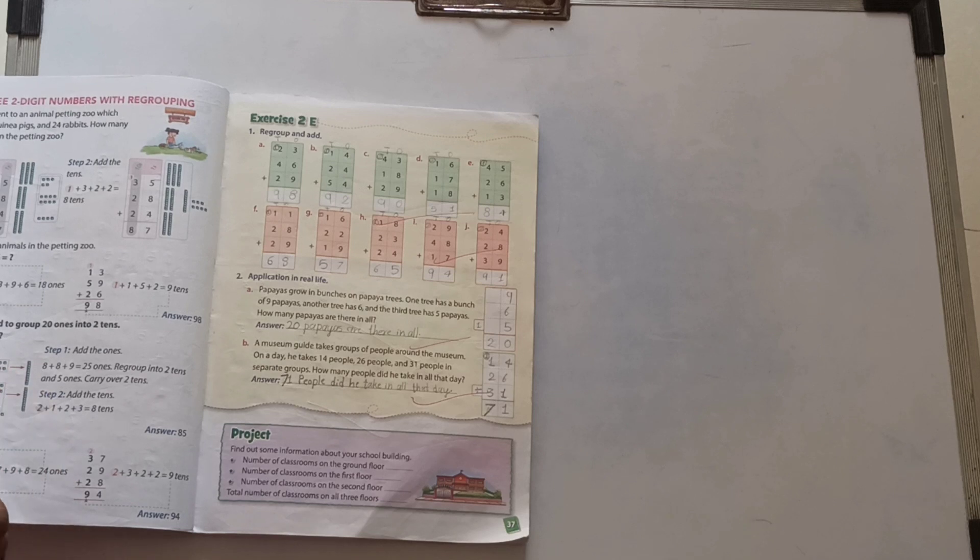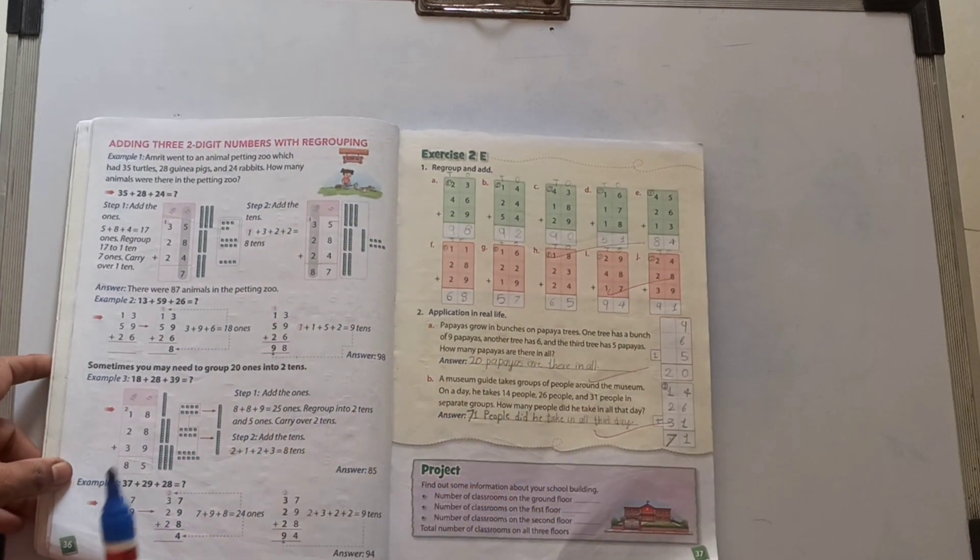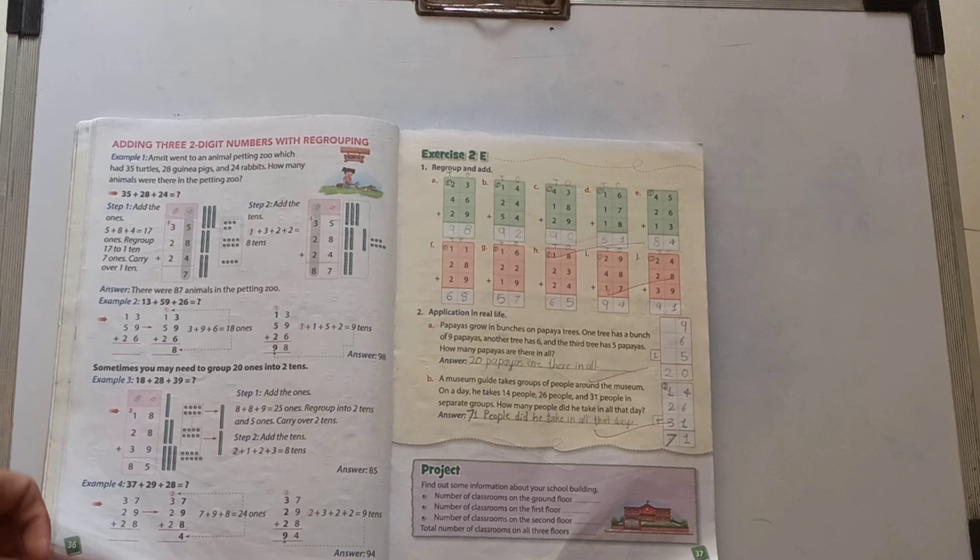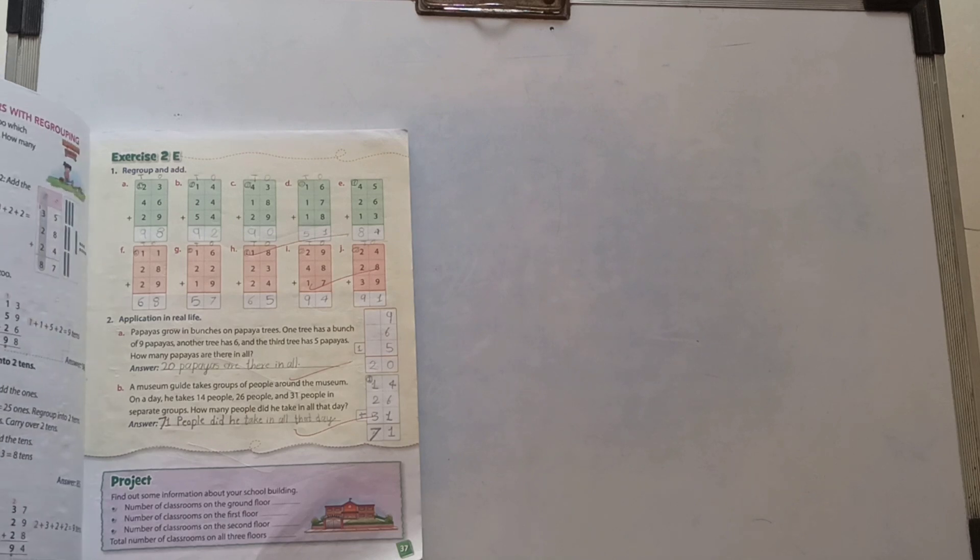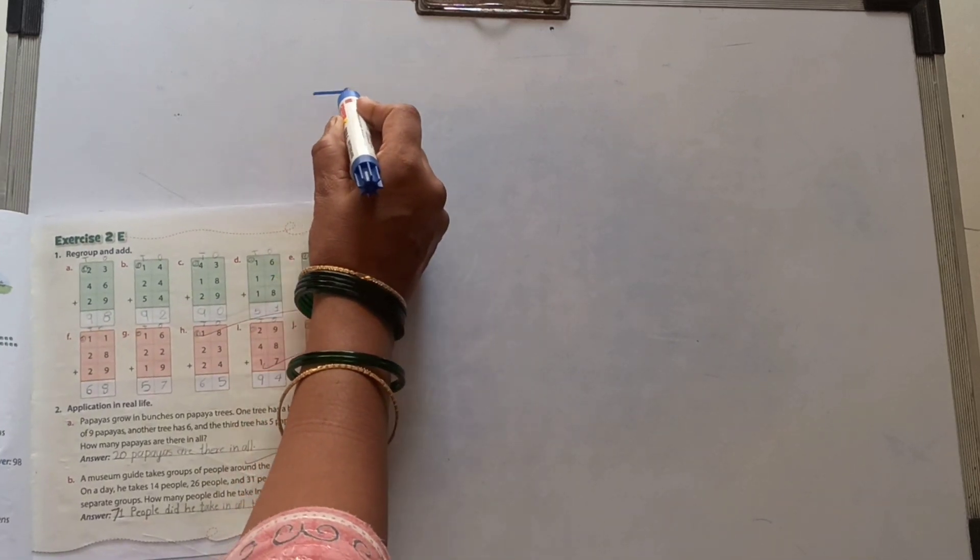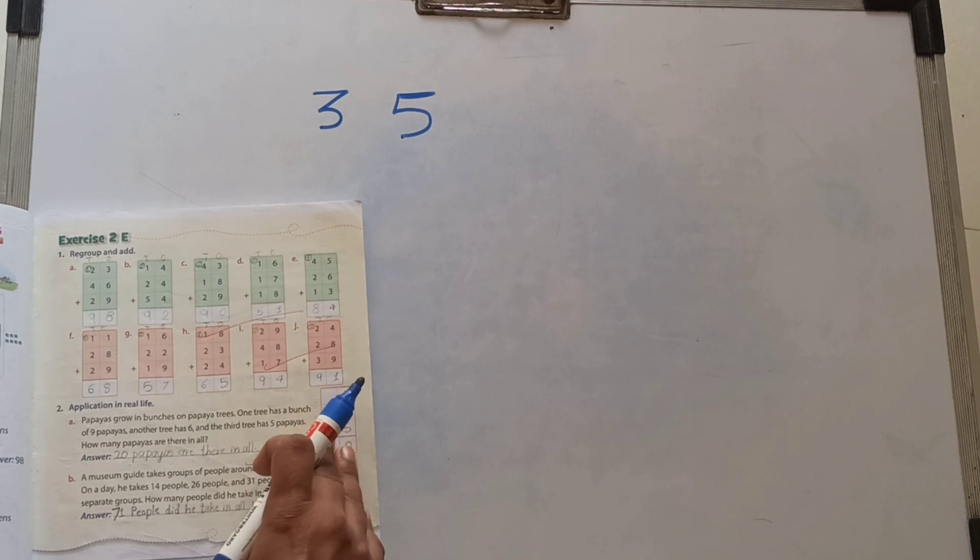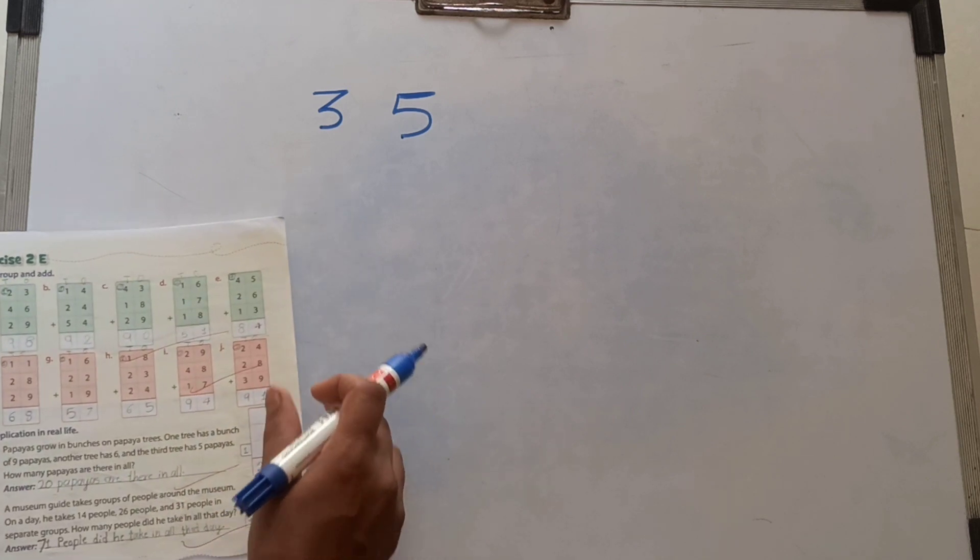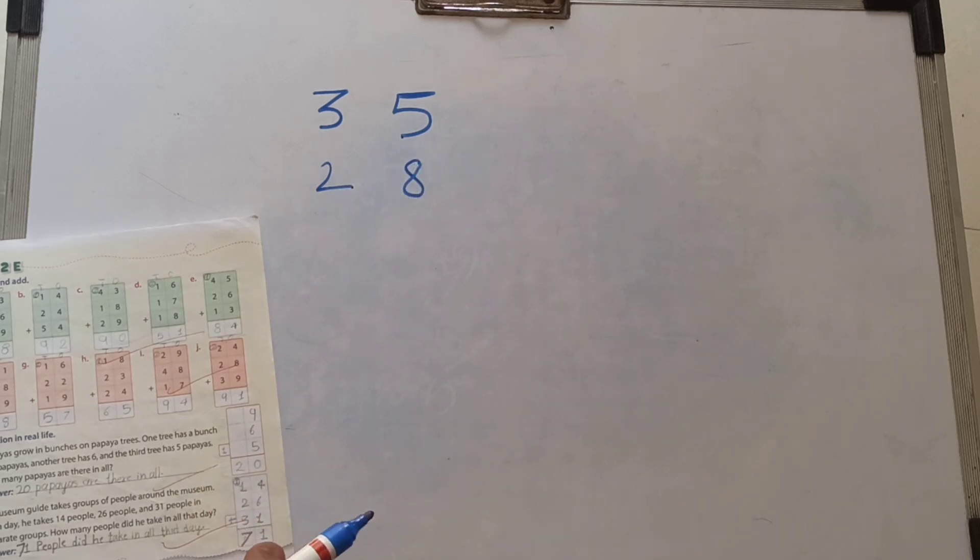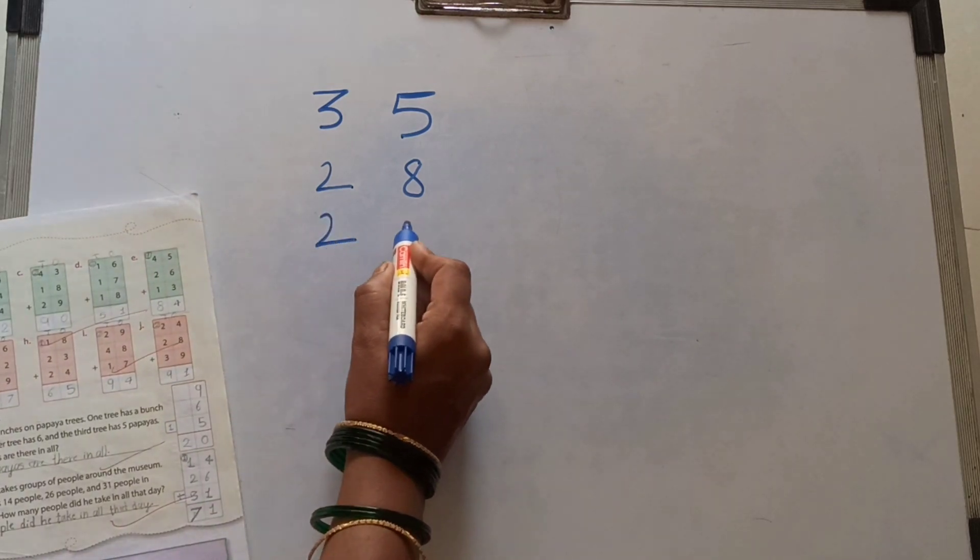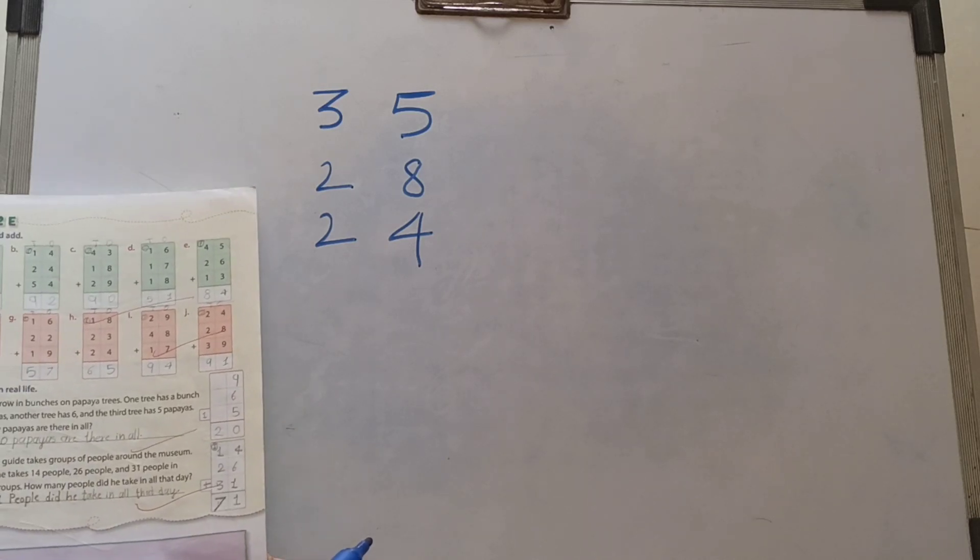First, our example: Amrit went to an animal petting zoo which had 35 turtles, 28 guinea pigs, and 24 rabbits. How many animals were there in the petting zoo?